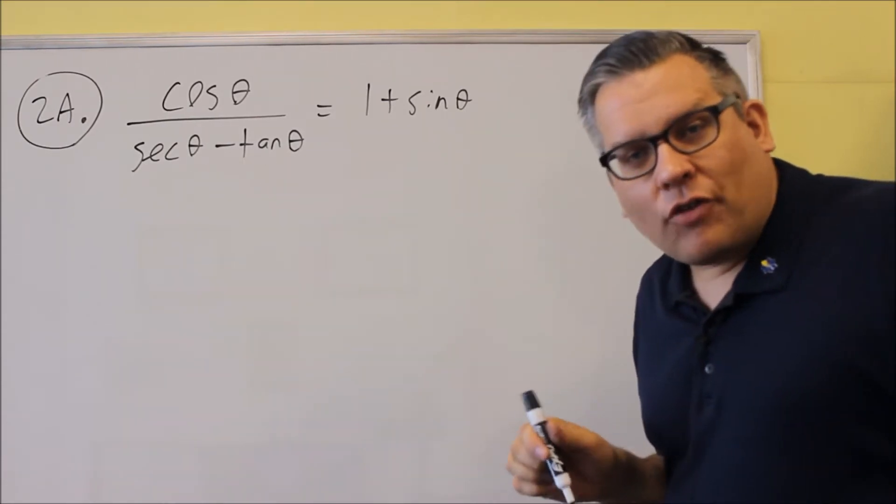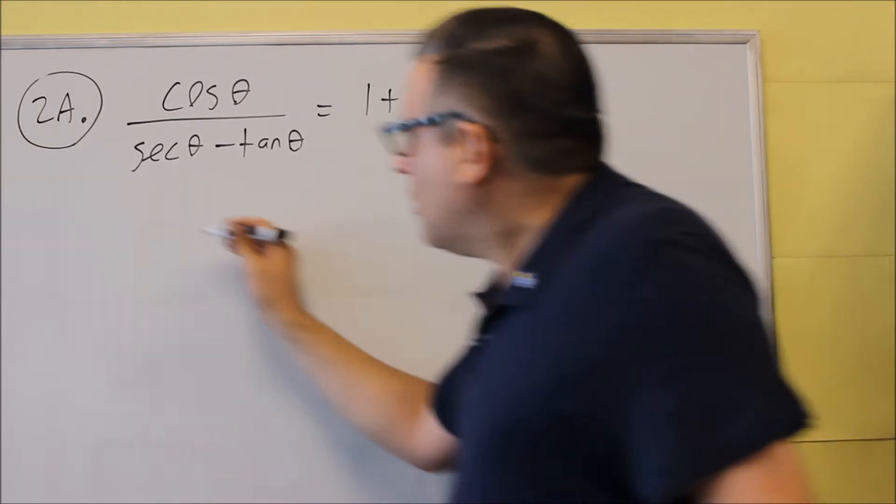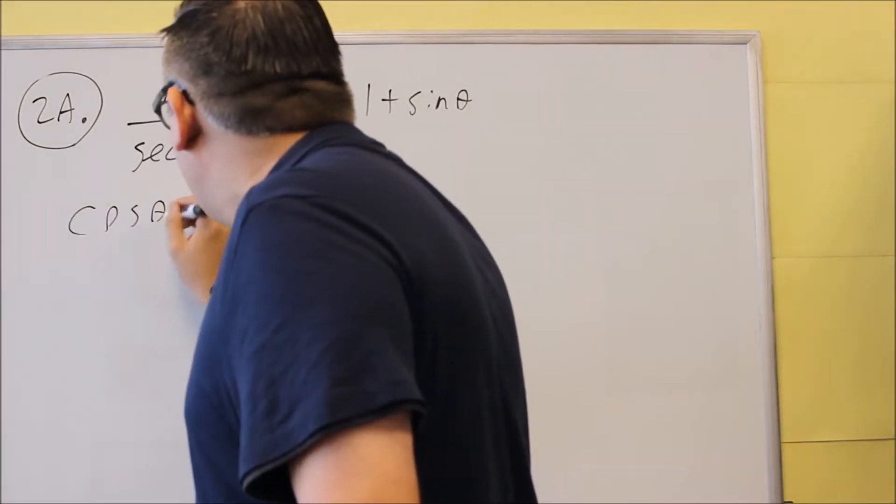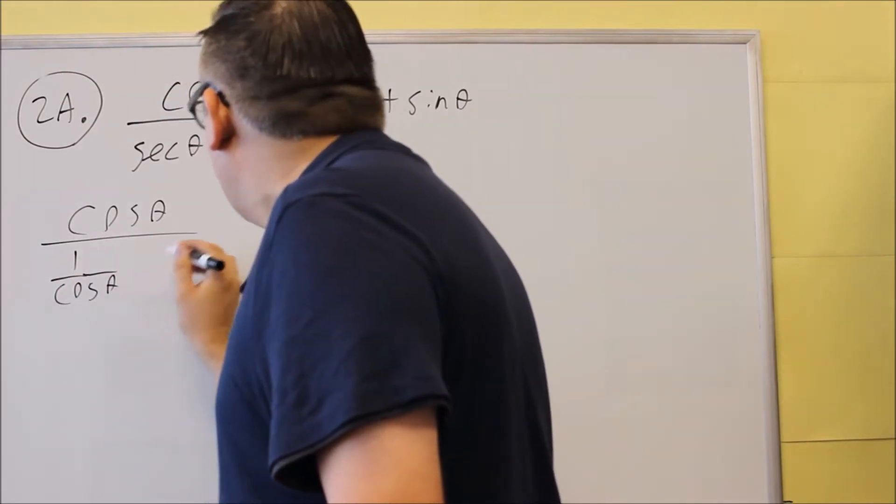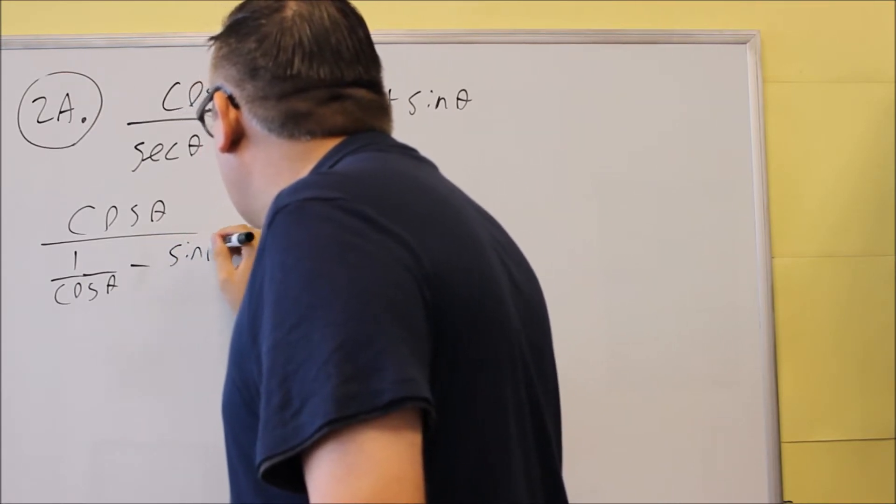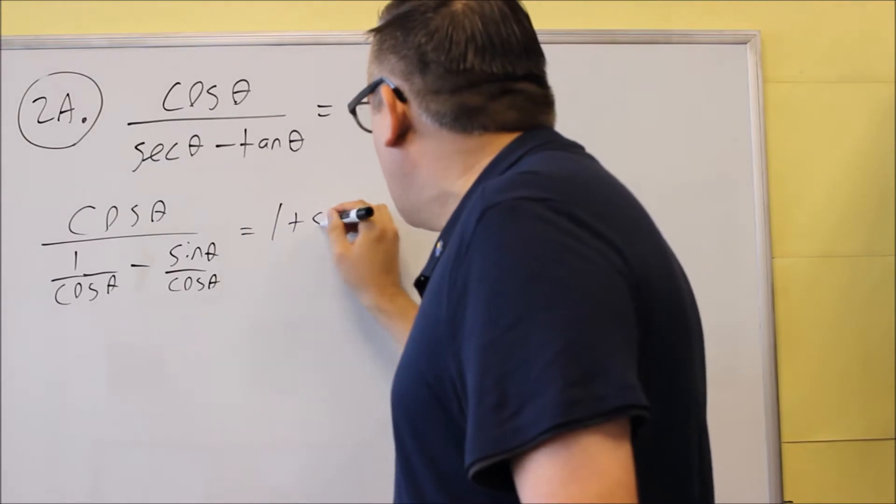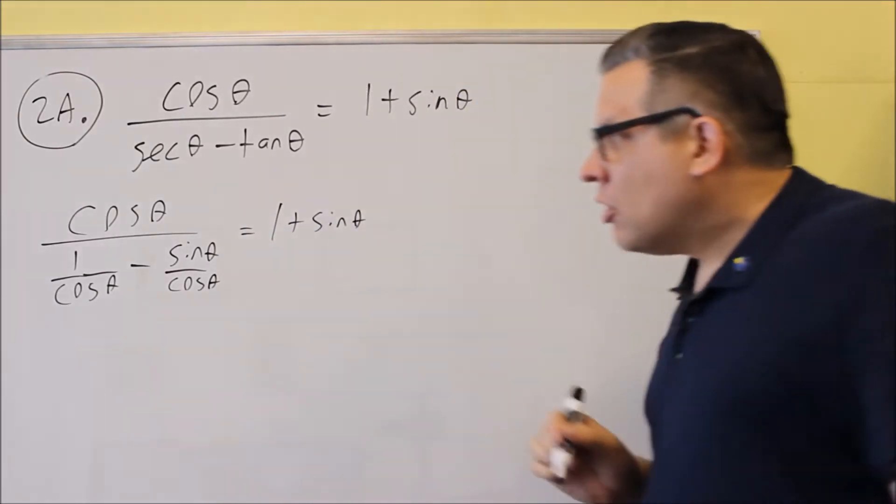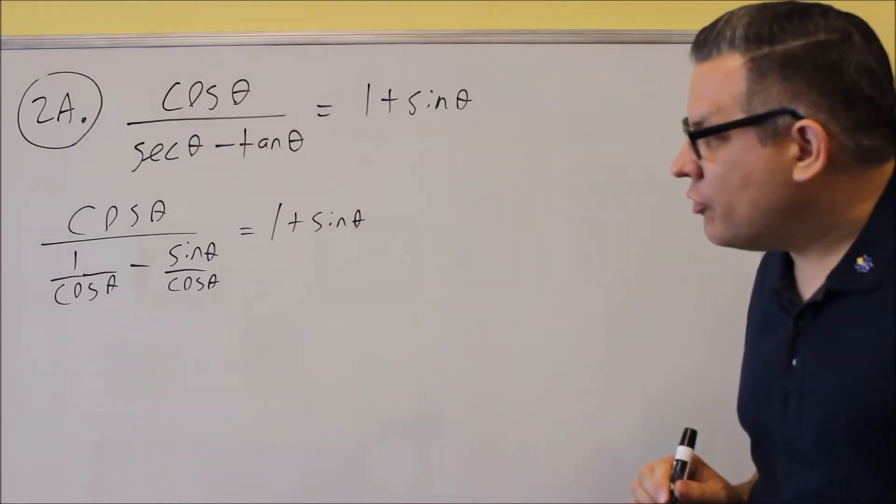So I want to put the identity in for secant and for tangent to turn those into sines and cosines. For the identity there, we're going to do cosine over one over cosine, and then it'll be a minus here. We have minus sine theta over cosine theta. And we're not going to do anything with the right-hand side. So that's our first step if we do this.